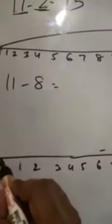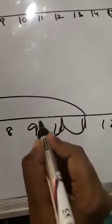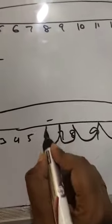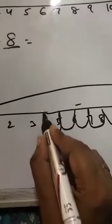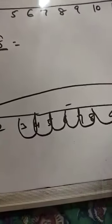And the next question is 11 minus 8. Ismein bhi ham beta. We start with 0. Then move on 11. 11 number per chale gaye. Then hamne cut kitne karne hai? To hamne 8 step pichhe jana hai beta. 1 step, 2 step, 3 step, 4, 5, 6, 7, 8. Ye hamare 8 steps the hai.